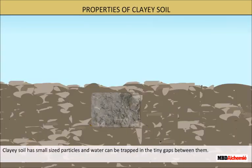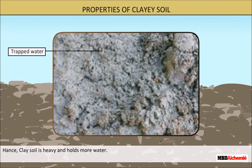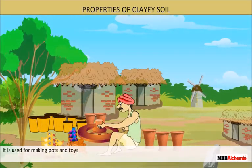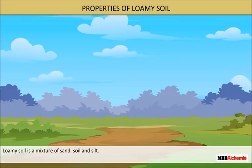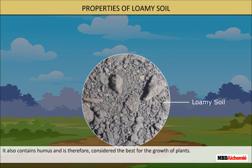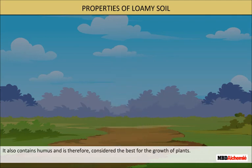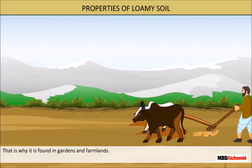Clayey soil has small sized particles and water can be trapped in the tiny gaps between them. Hence, clayey soil is heavy and holds more water. It is used for making pots and toys. Loamy soil is a mixture of sand, soil and silt. It also contains humus and is therefore considered the best for the growth of plants. That is why it is found in gardens and farmlands.